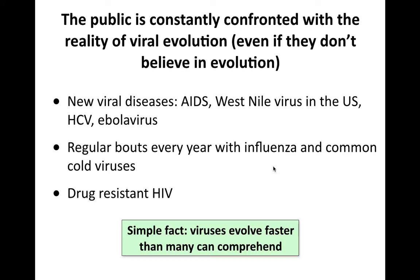Even if many people do not believe in evolution, if you look at what viruses do, you have to believe it. We have new viral diseases like AIDS, West Nile virus, hepatitis C, and Ebola — all relatively new additions to human infections, and they're there because of evolution. Every year people get influenza, common colds, noroviruses. Drug resistance, particularly for HIV, but for other viruses as well — all of these are features of viral evolution. And viruses evolve faster than we can really understand, because you can't see them and can't appreciate the fact that they're evolving very quickly.